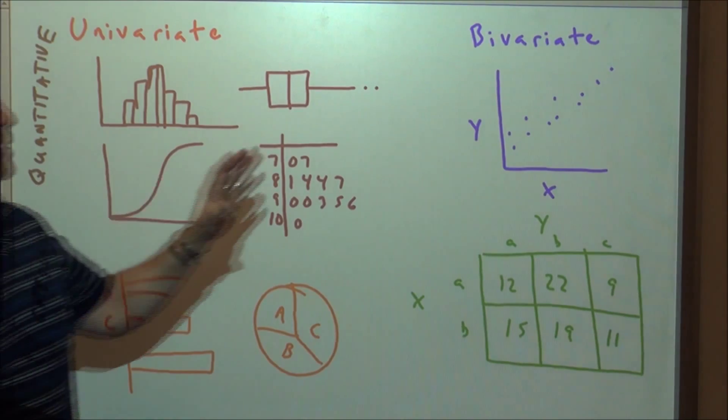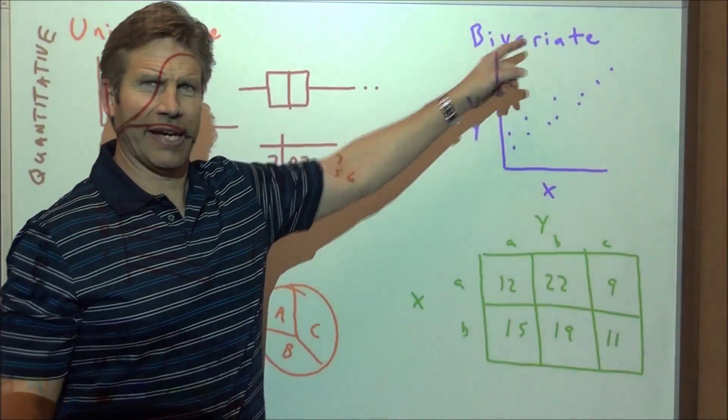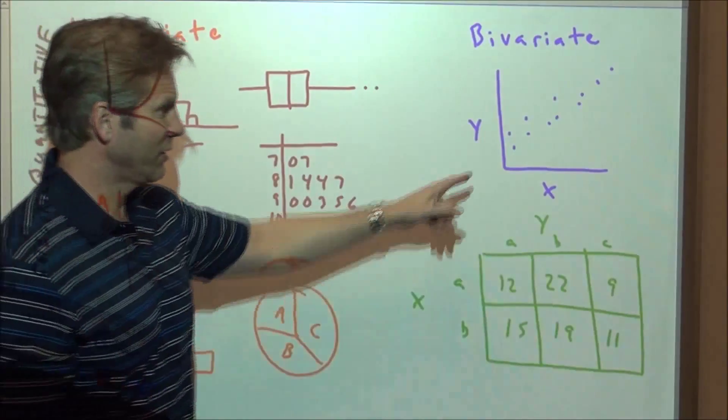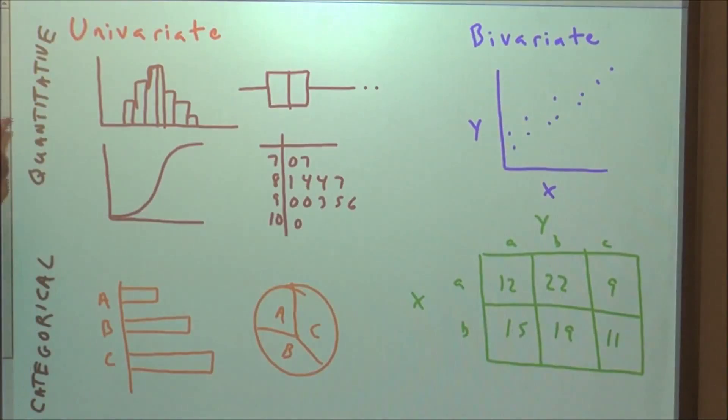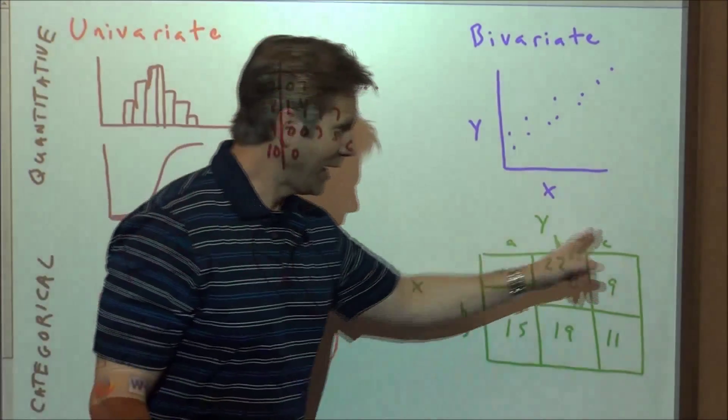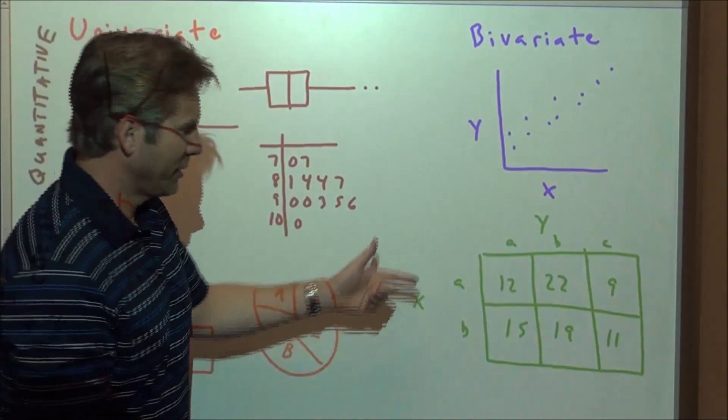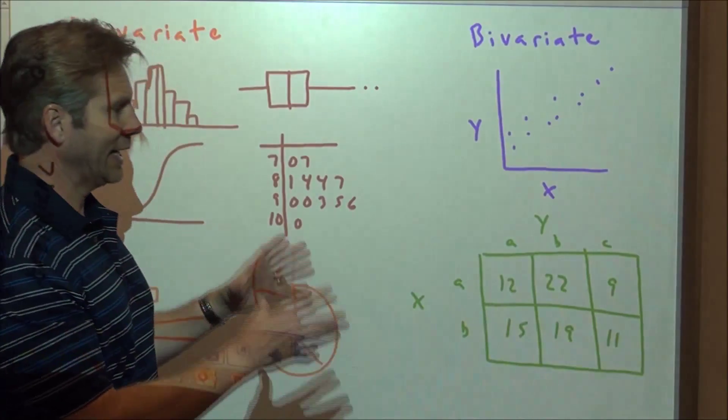Later, we're going to deal with bivariate data, which is two variables simultaneously. We've seen that before with scatter plots when, again, the data is quantitative. When the data is categorical, like what state do you live in at a conference and males and females, something like that, categorical data,